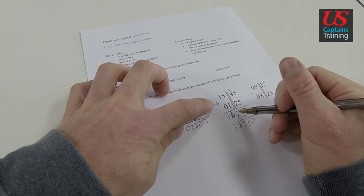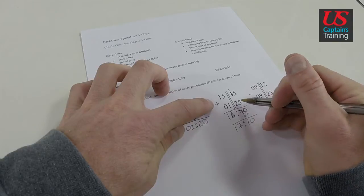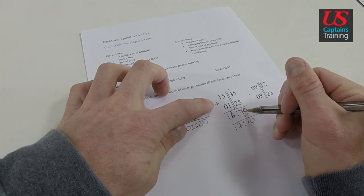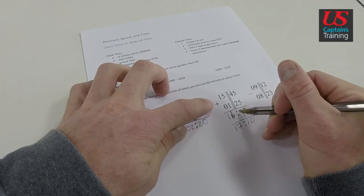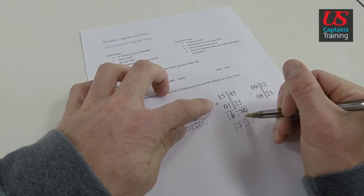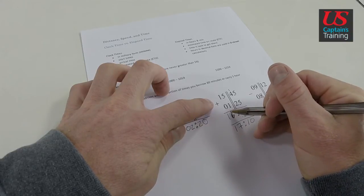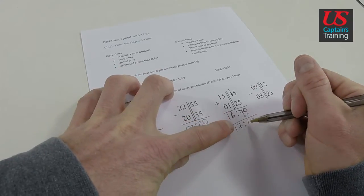So this 70, which came from 45 plus 25 is 70, is actually 1 hour and 10 minutes. So we took 60 minutes out of there and made it into an hour. We came up with 17, 10.